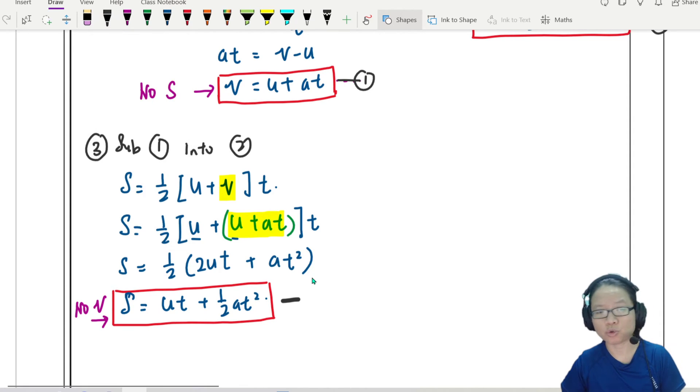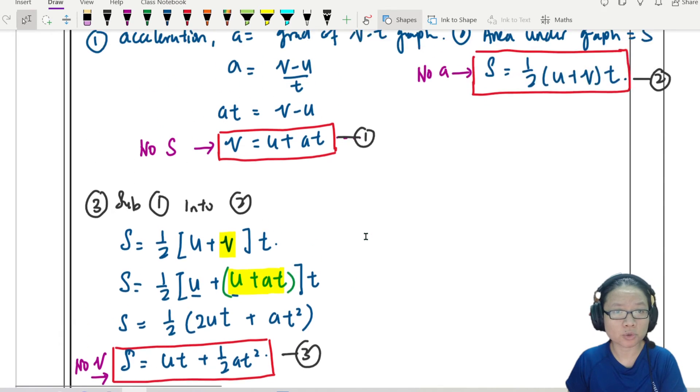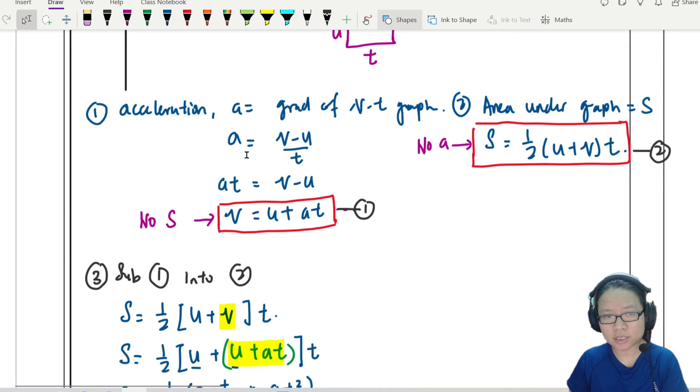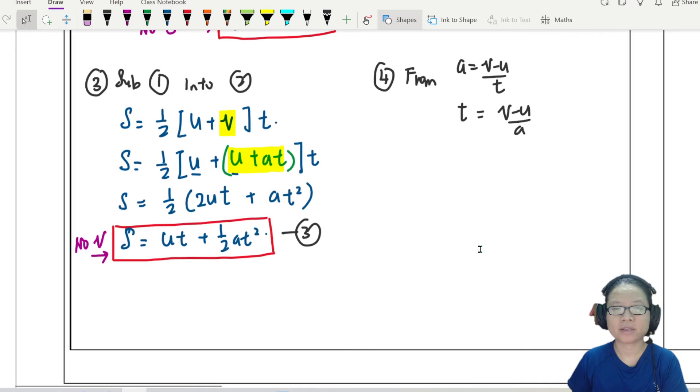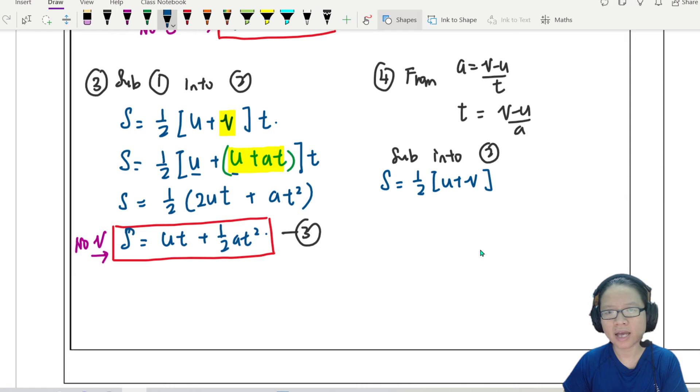So let's think about what to substitute. If I want to substitute t, this equation can use, but I need to rearrange a bit. So I'm going to write here number 4. And I will just say from a is equal to v minus u over t. I can write t is equal to v minus u over a. So I just exchange t and v. Now, when I do that, I am now going to substitute into still equation 2. So now if I write my equation, I will write s is half u plus v and t will be v minus u over a.